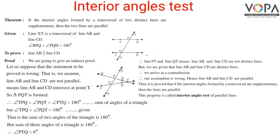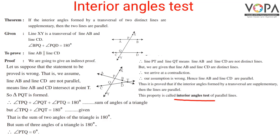Therefore line AB and line CD would not be distinct lines, but we are given that they are distinct lines. This is a contradiction, so our assumption is wrong. Hence line AB and line CD are parallel. This property is called the interior angles test of parallel lines: if the interior angles formed by a transversal are supplementary, then the two lines are parallel.